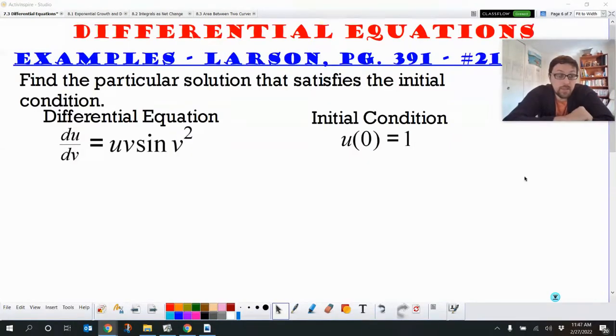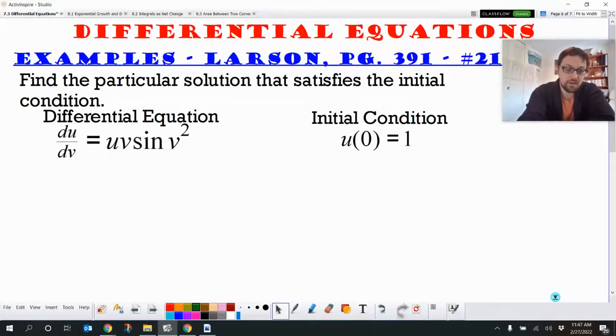Okay. In this one, we want to actually figure out the particular solution that satisfies the initial condition. So we're going to actually get rid of the c when we are done using that initial condition we were given. We still want to do that separation of variables. So over here, we've got du and dv. We've also got a u and a v on the right-hand side. Not cool with that.